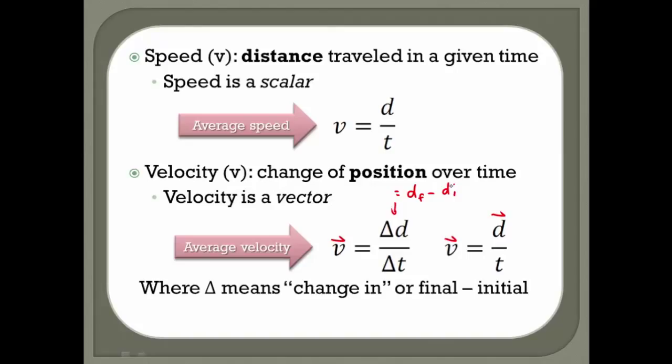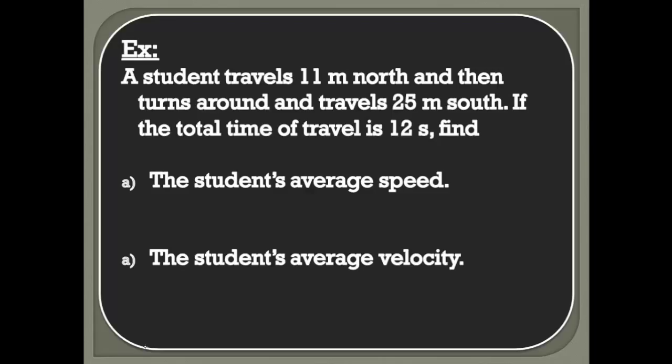Let's use these equations in a couple different questions. A student travels 11 meters north and then turns around and travels 25 meters south. If the total time traveled is 12 seconds, find the student's average speed.